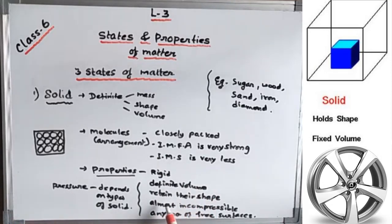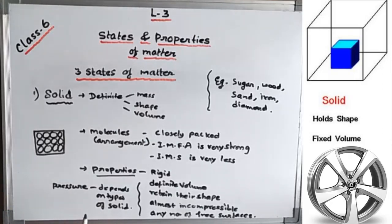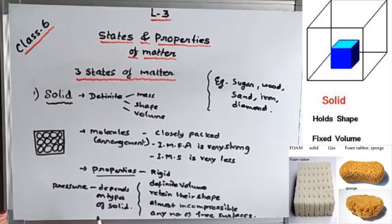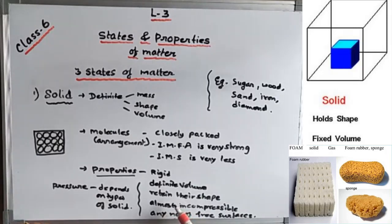Solids retain their shape — the molecules always try to come back to their original position. Like an elastic rubber band when you stretch it, it comes back to its original shape. Or a sponge — when you press it and release, it comes back to its original shape. Solids are almost incompressible, and there are two types of solids: hard solid and soft solid.